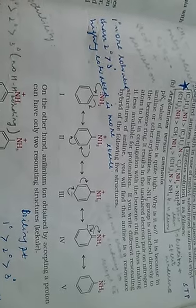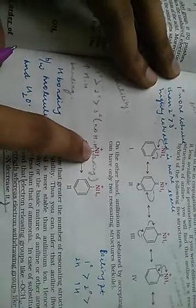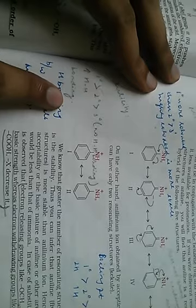Now coming to the anilinium ion which you get while donating the electrons, it has only two resonance structures. Hence, there are so many stable structures in aniline and lesser number in anilinium. So the reaction to transform from here to here is unlikely because it's more stable in this state than in that state. The stability decreases, hence ammonia is much more basic than arylamines.